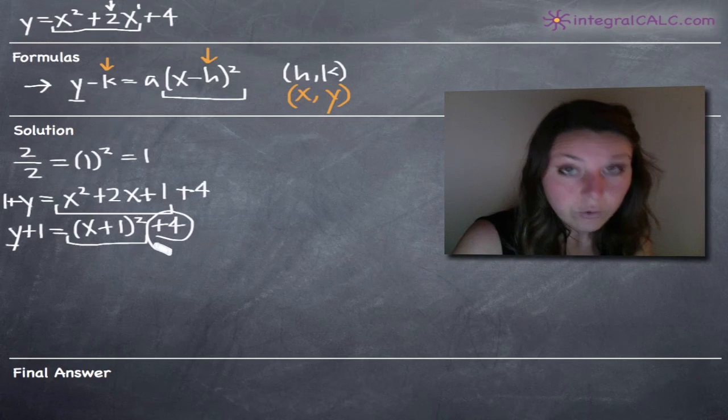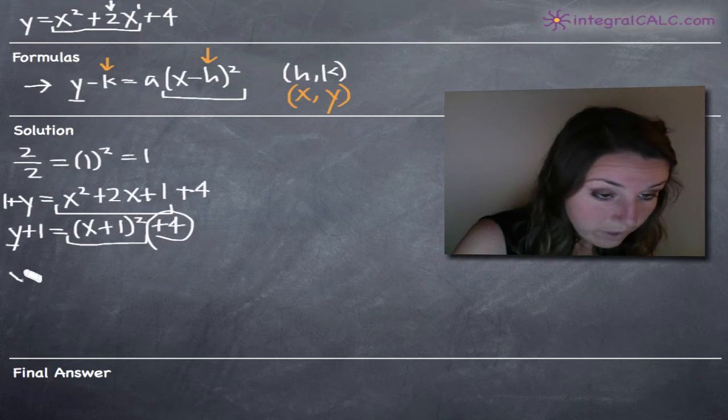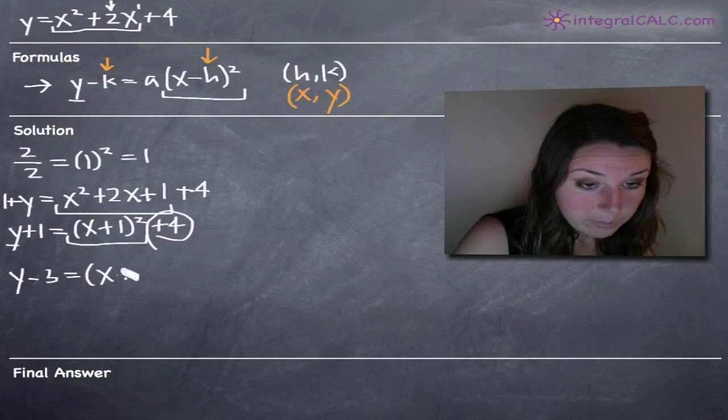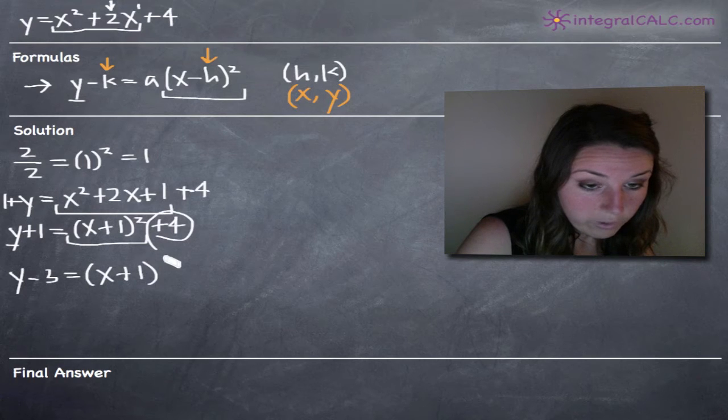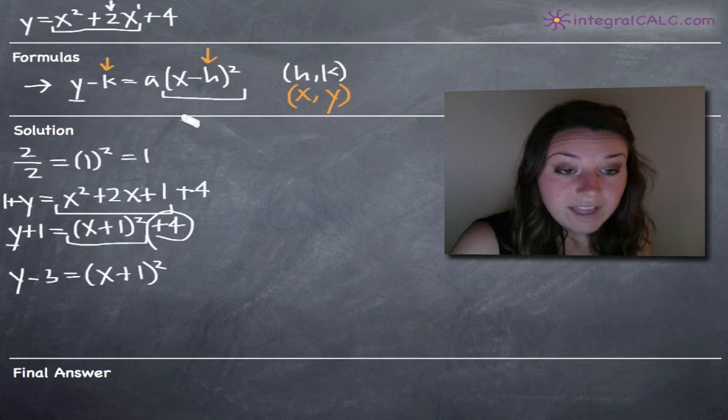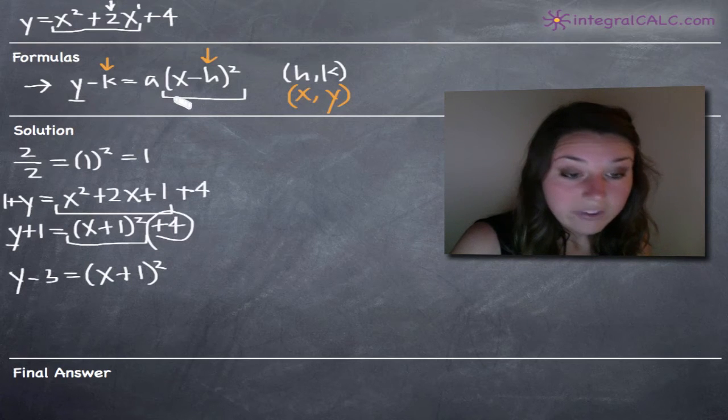To move it over to the left-hand side, we'll need to subtract four from both sides of the equation, and when we do that, we'll get y minus three equals x plus one squared.